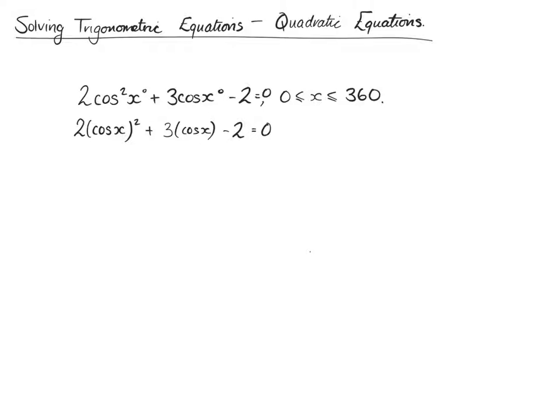We can take this and we can rewrite it and pick a letter, any letter. I'm going to pick c for cos and say c equals cos x and rewrite this function as 2c squared plus 3c minus 2, to help us to be able to factorize this, because what we're doing here is we have to factorize it like a quadratic equation we've done so far, like a trinomial.